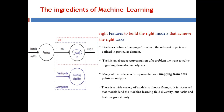The next ingredient is the task — it is an abstract representation of a problem we want to solve regarding domain objects. For example, the task could be to decide the price of a used car or decide the mileage of the car. Many tasks can be represented as a mapping from data points to output, and this mapping is generally done by the machine learning model. There are a wide variety of models to choose from: geometrical models, probabilistic models, algebraic models, logical models, discriminative models, and more. The model links the machine learning field's diversity.